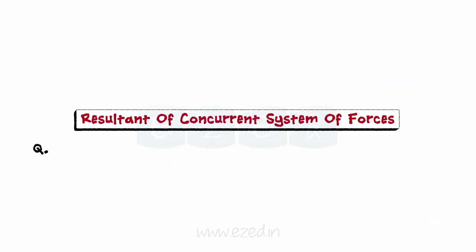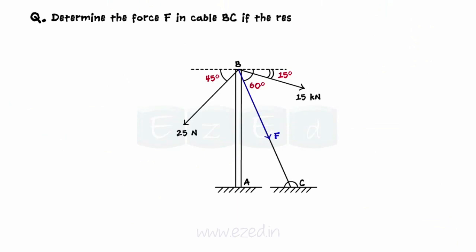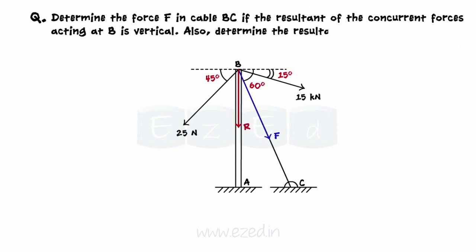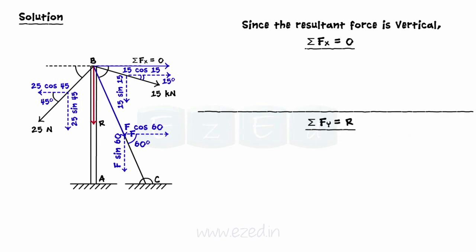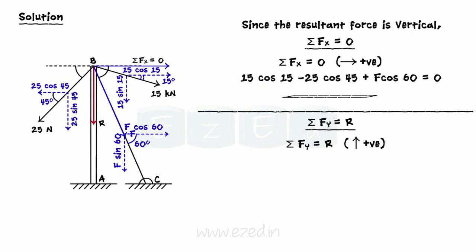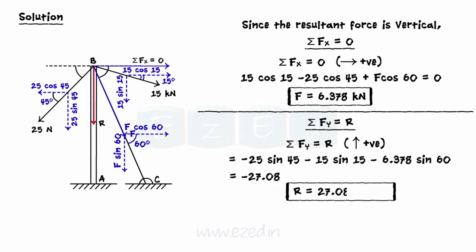Now let's consider the following problem. Determine the force F in cable BC if the resultant of the concurrent forces acting at B is vertical. Also, determine the resultant. We will first resolve all the inclined forces along the x-axis and y-axis. This is a concurrent system of three forces acting at B with a vertical resultant — that is, the system has zero horizontal component — and we have to find the unknown force and the resultant. We equate the summation of forces along the positive x-axis to zero and along the y-axis to the resultant. On solving, we find the unknown force F equal to 6.378 kilonewtons and the resultant equal to 27.08 kilonewtons.